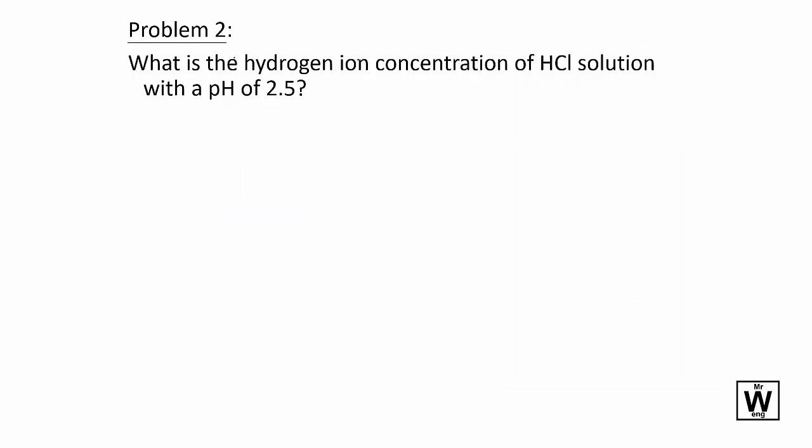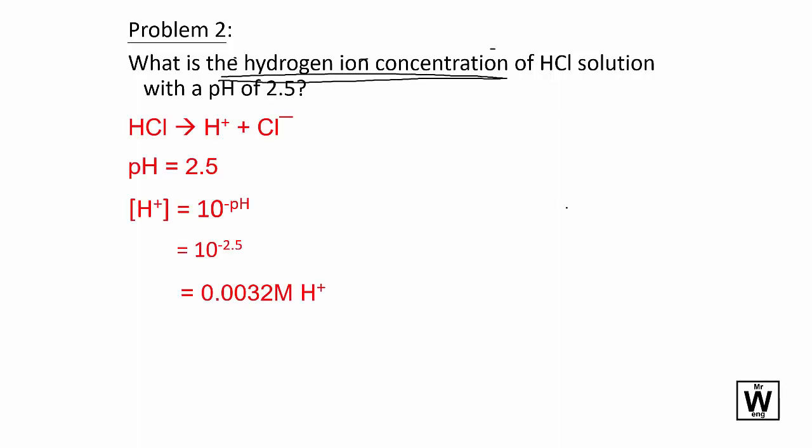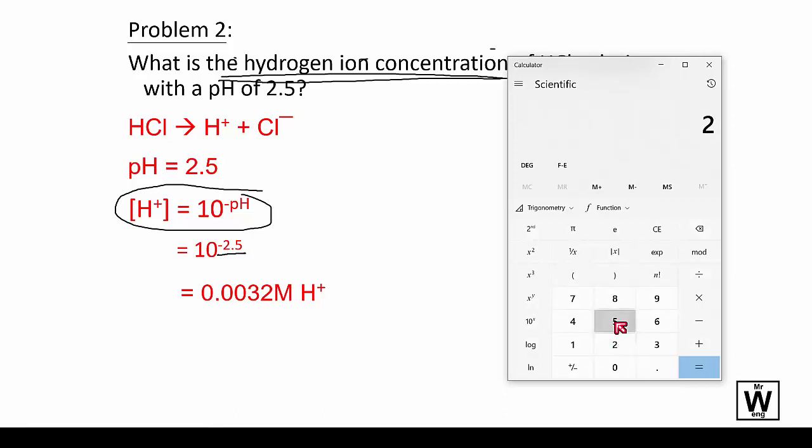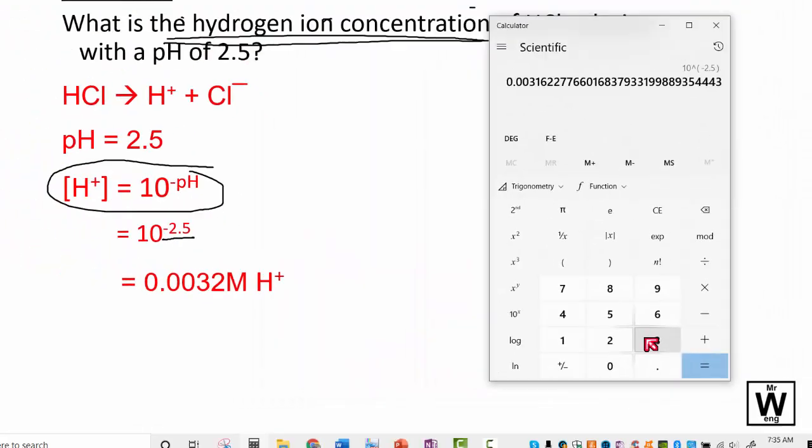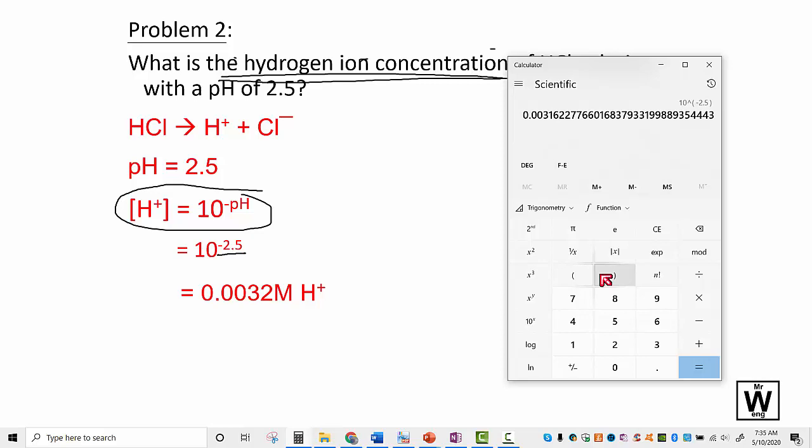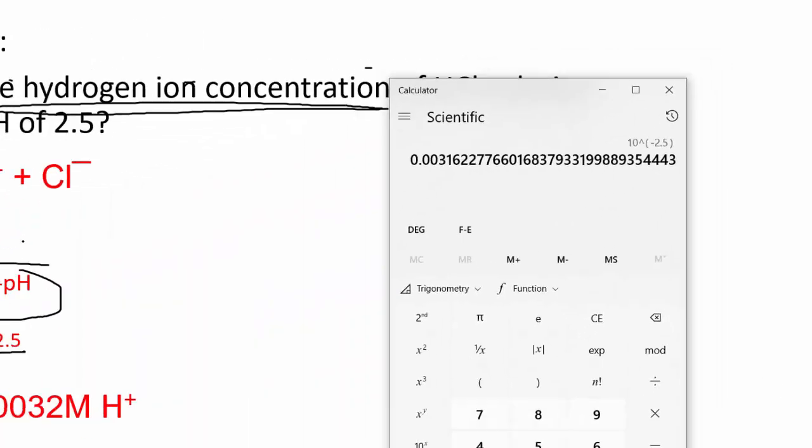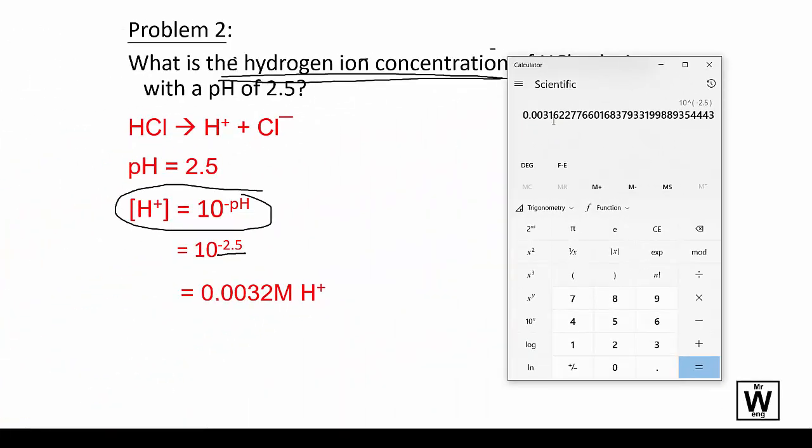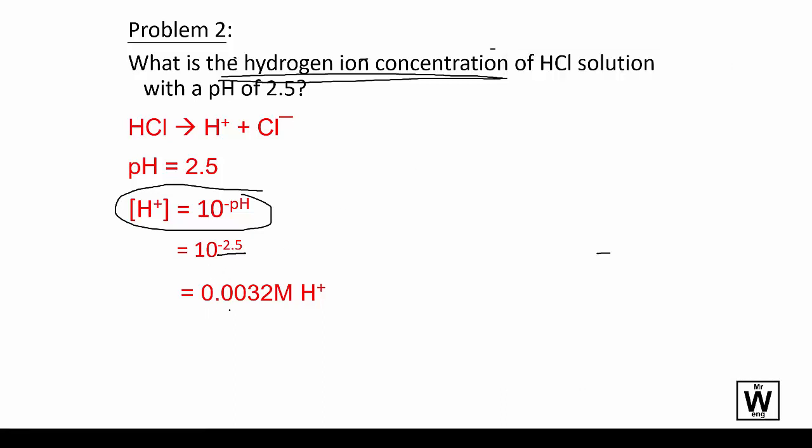And just to do the reverse, you may be asked, you may need to know what the hydrogen ion concentration is knowing the pH. So the formula for that is on the previous slide, which is here. You basically just put minus 2.5 into the calculator, which I'll show you how to do now. So 2.5, give it a negative symbol, and that's the button there. And voila, there we go. We'll round it off to two sig figs because there's two sig figs there. So 0.00316 rounds up to 0.0032.